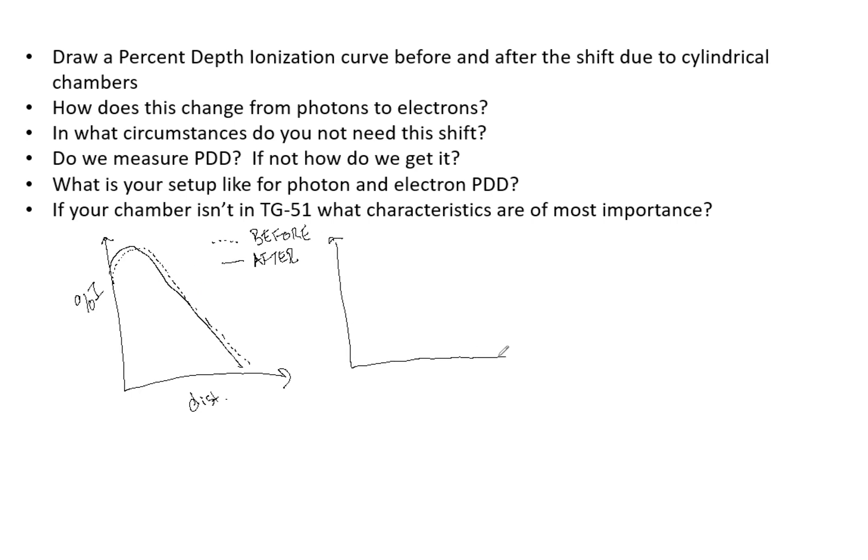Now, if we look at electrons, it's the same thing. Nothing changes. It's just obviously the curve is going to look a little different because now we're looking at an electron curve instead of a photon curve. So again, dotted line is before the shift.